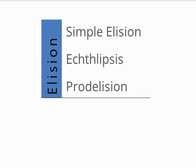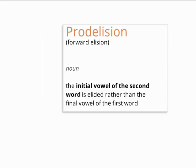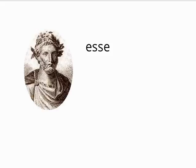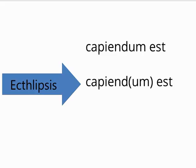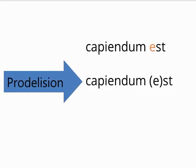The third type of elision is prodelision, which means forward elision. It is like elision, except the initial vowel of the second word is elided rather than the final vowel of the first word. This is especially common with forms of esse and occurs frequently in the early comedies of Plautus. For example, consider capiendum est. We could use ectlipsis, resulting in capiendest. But instead, it is the E in est that is elided, yielding capiendumst. Sometimes this is even written as capiendumst, explicitly marking the prodelision. Similarly, futura est would become futurest.